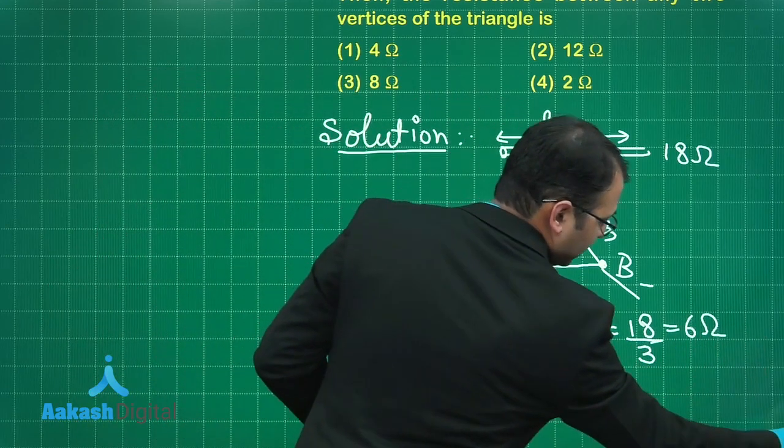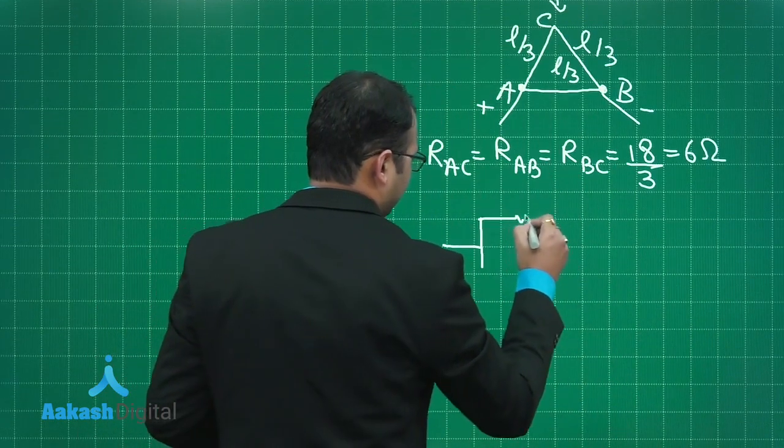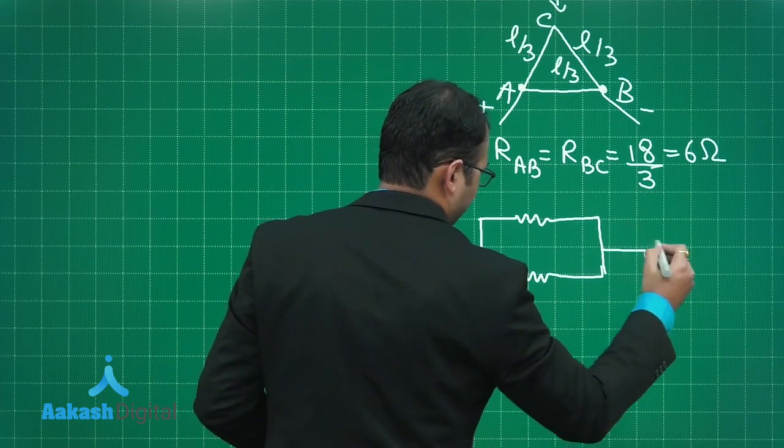So the net resistance between A and B can be made like this.